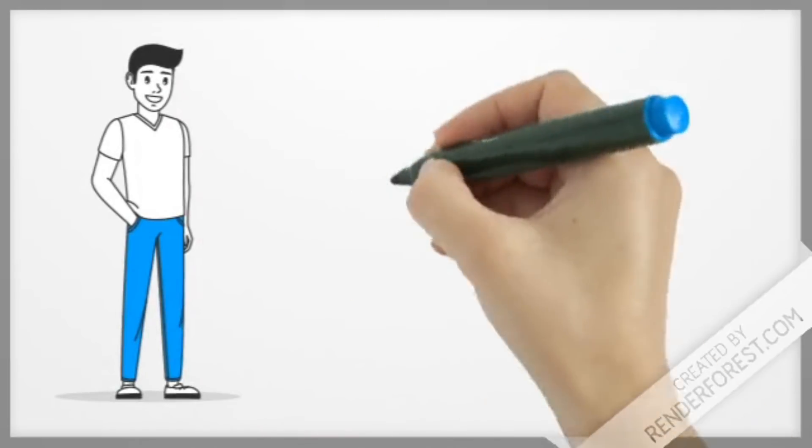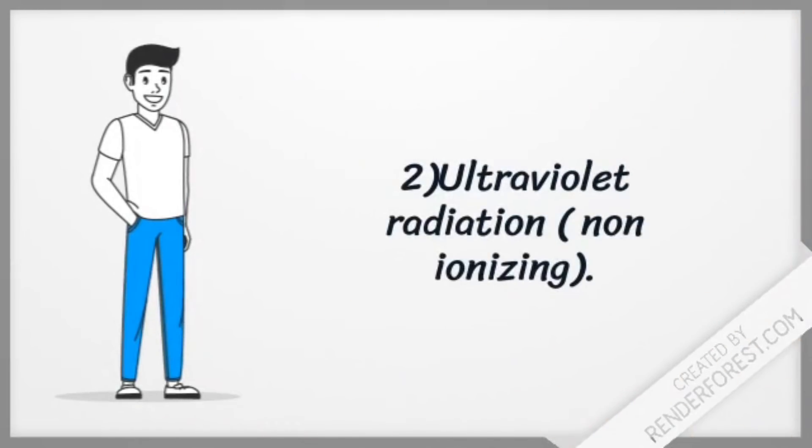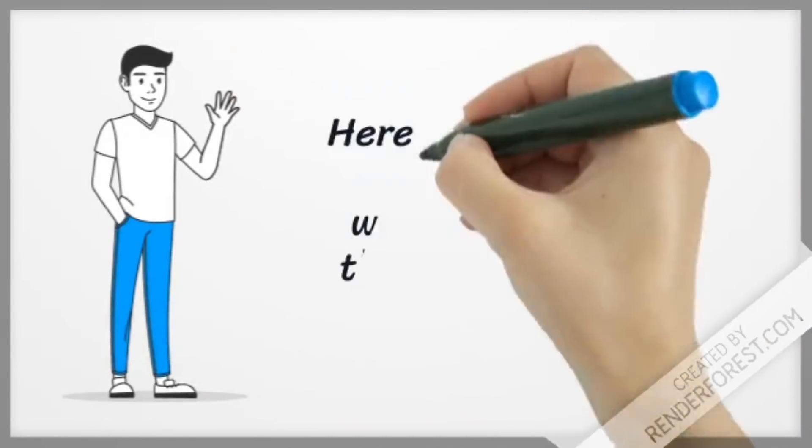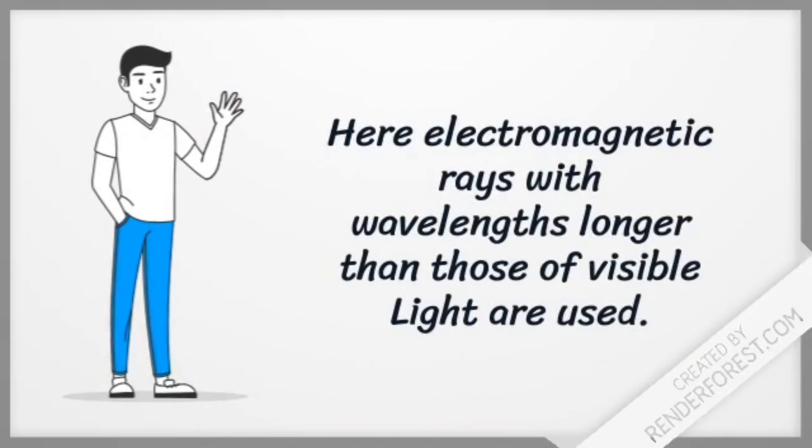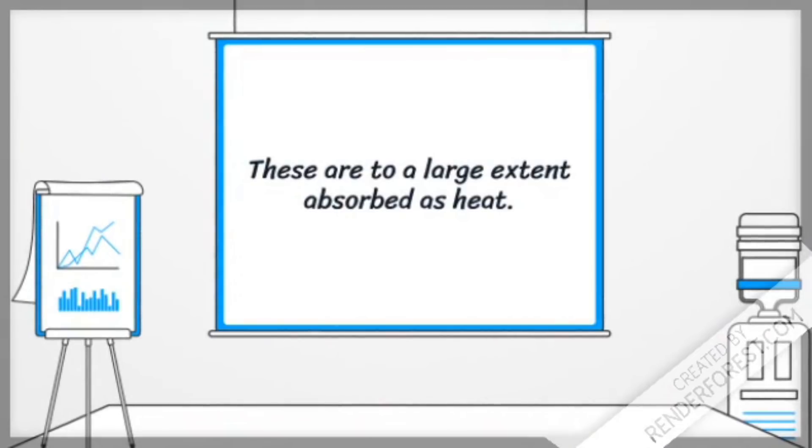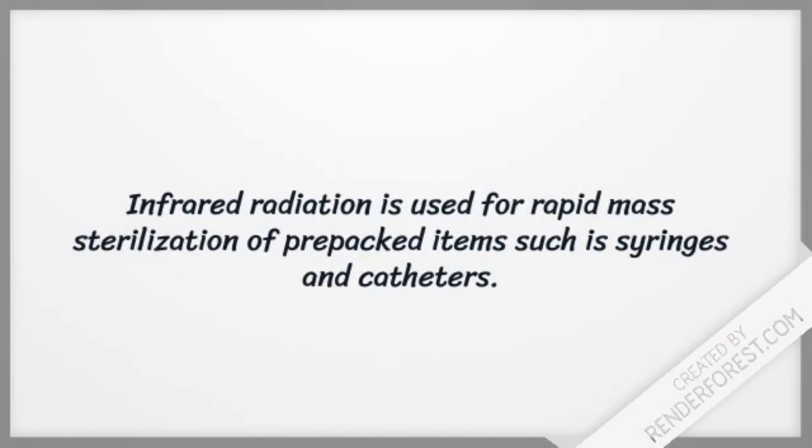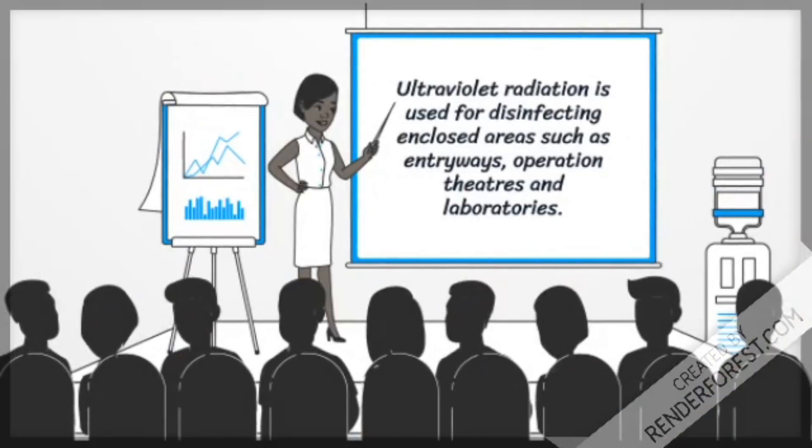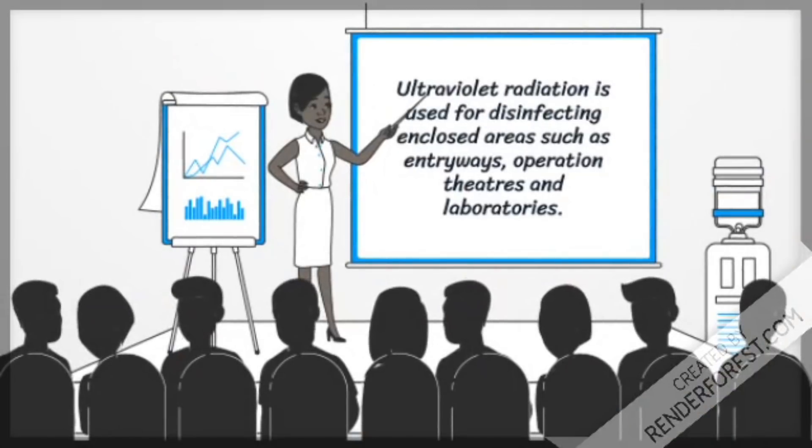Ultraviolet radiation, non-ionizing. The electromagnetic rays are used, whose waves are longer than the visible light. Because of its wavelength, it is absorbed as heat. Infrared radiation is used to sterilize syringes and catheters. This method is also used to sterilize enclosed areas such as entryways, operation theaters and laboratories.